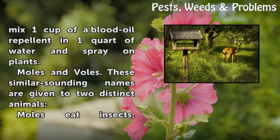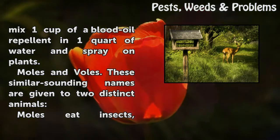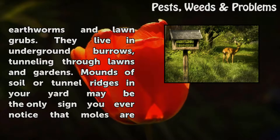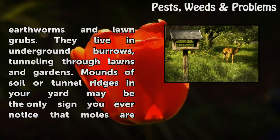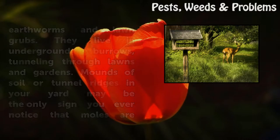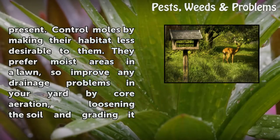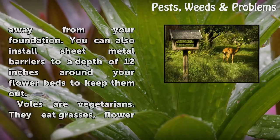Moles: moles eat insects, earthworms, and lawn grubs, living in underground burrows and tunneling through lawns and gardens. Mounds of soil or tunnel ridges in your yard may be the only sign of their presence. Control moles by making their habitat less desirable — they prefer moist areas, so improve drainage problems by core aeration, loosening the soil, and grading it away from your foundation. You can also install sheet metal barriers to a depth of 12 inches around flower beds to keep them out.